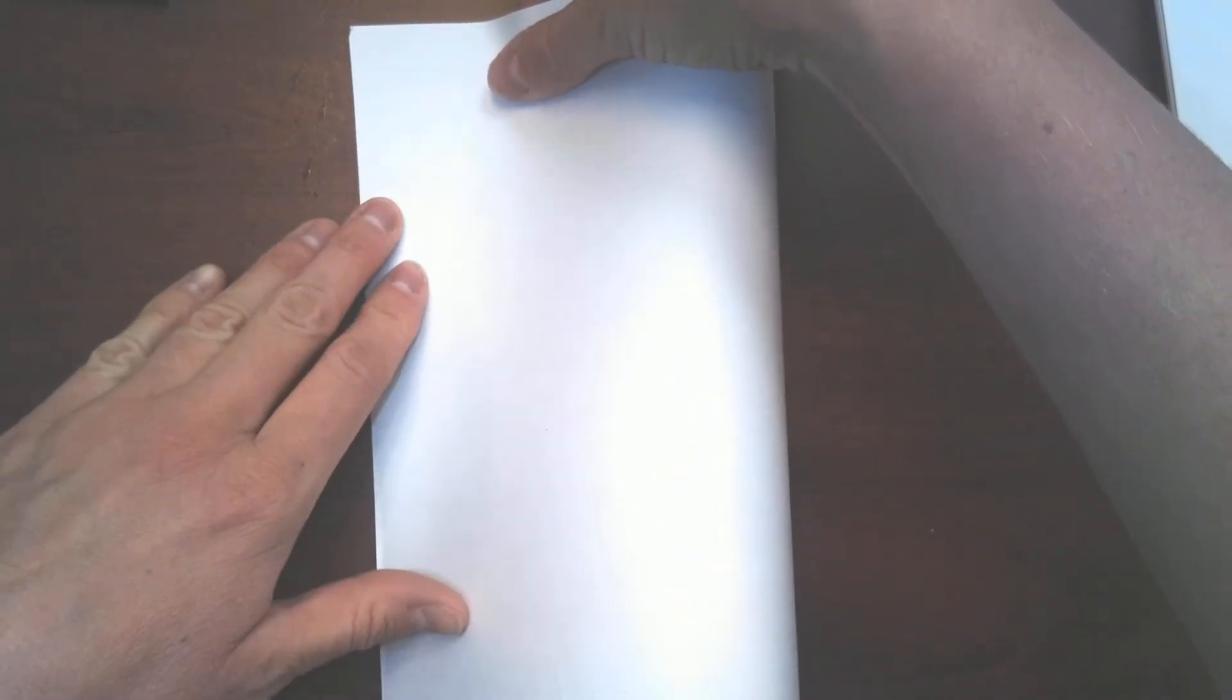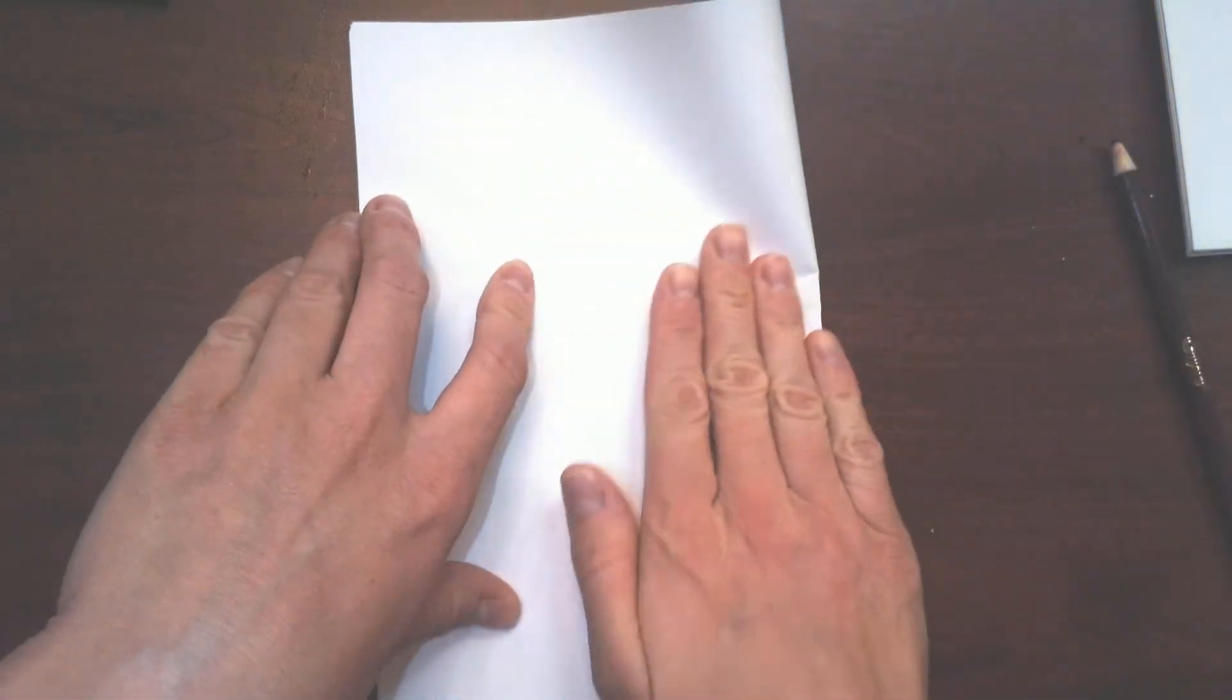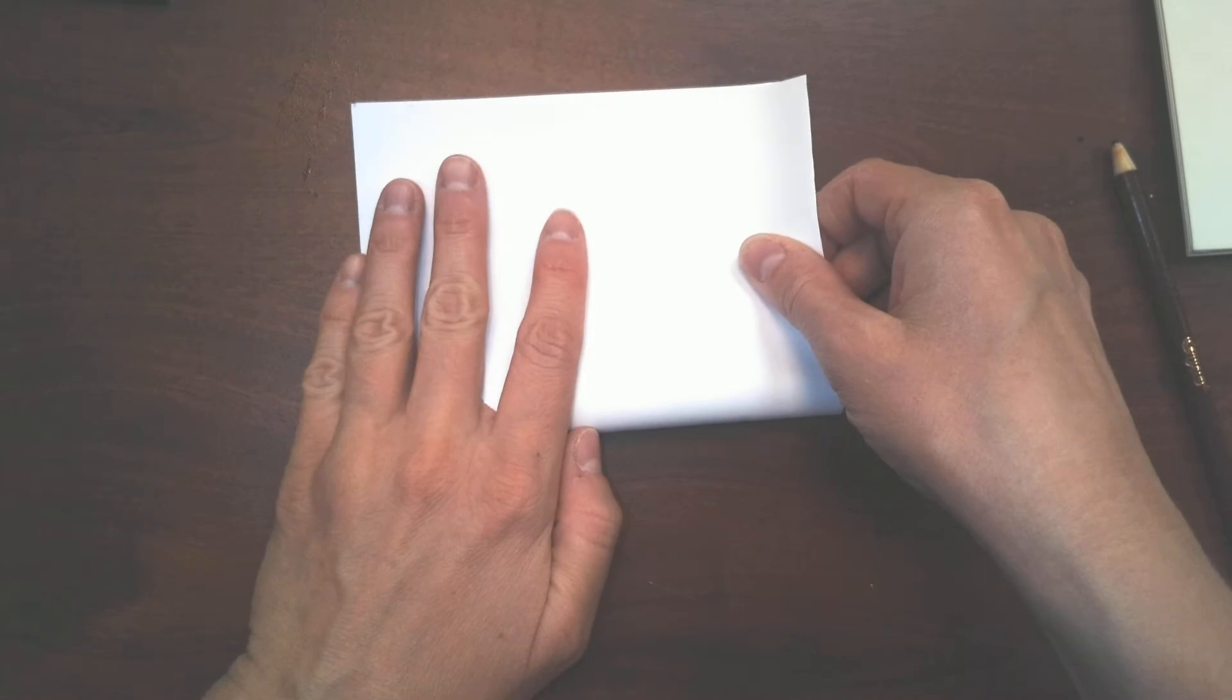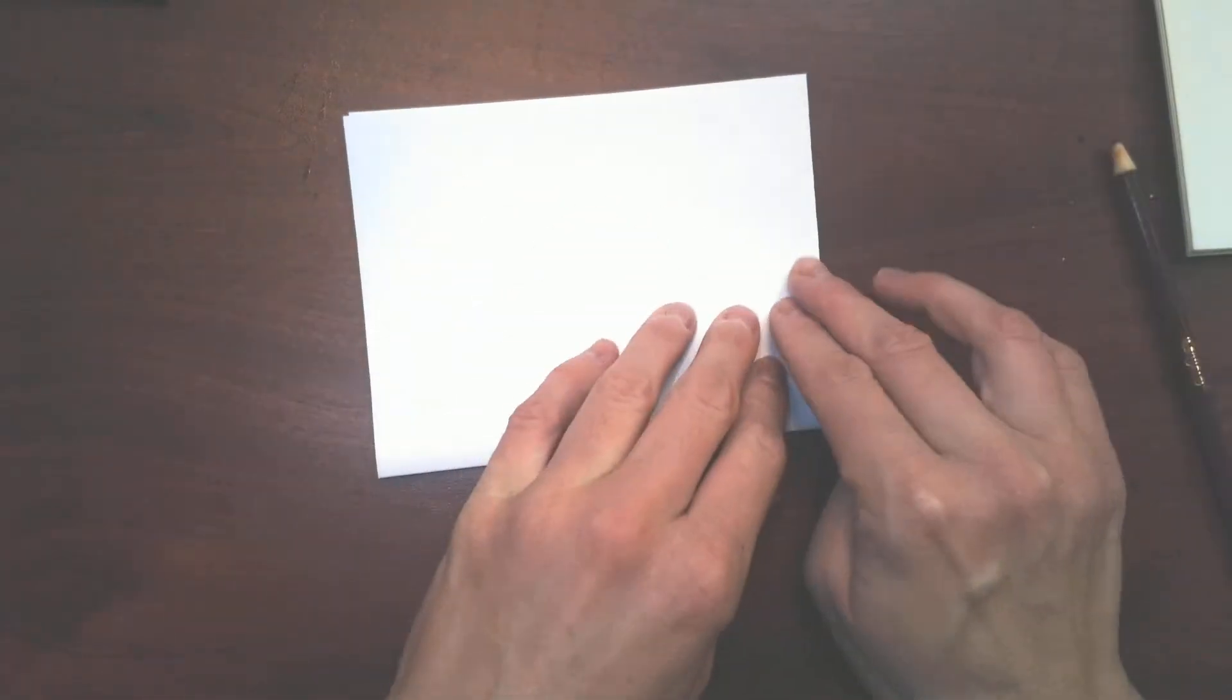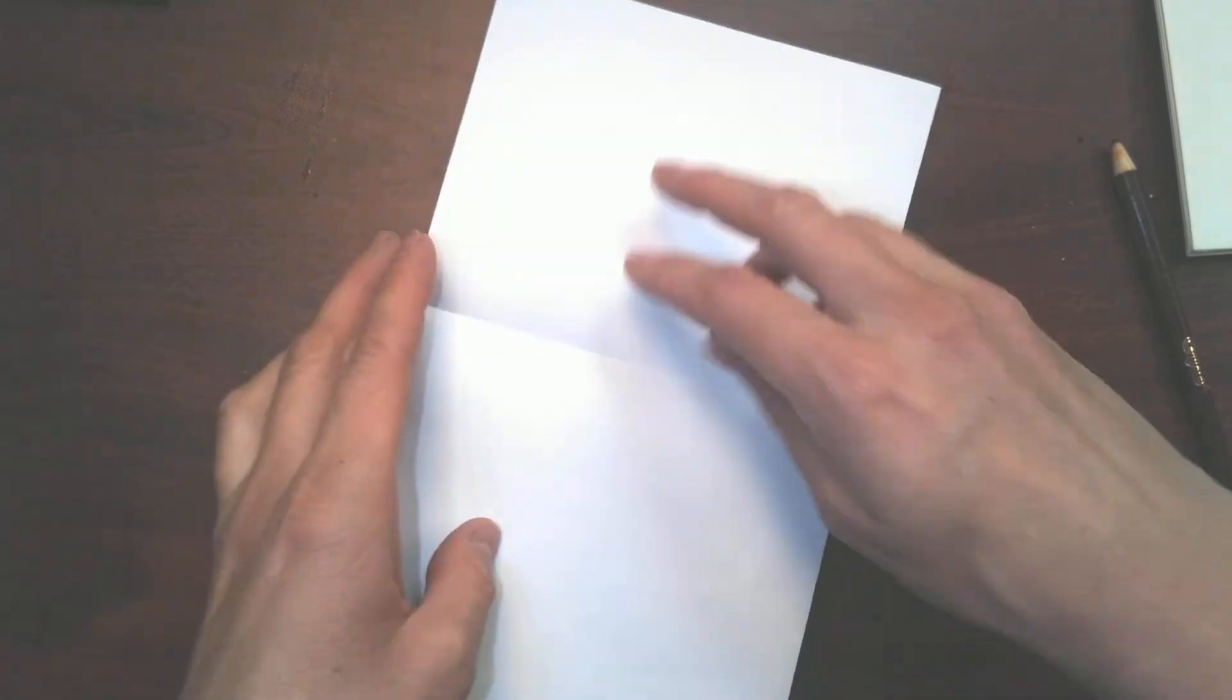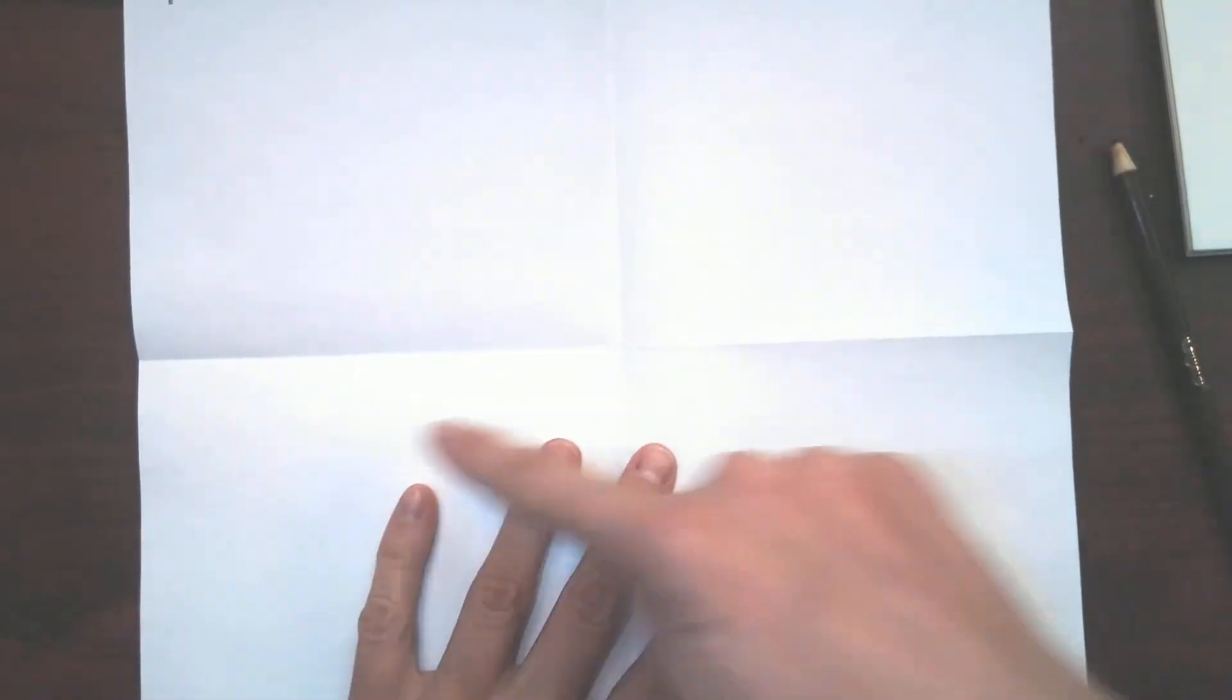First thing we're going to do is fold just a regular white piece of paper into four parts. So you're folding it into fourths. Now when we open it up, you can see I have four parts.